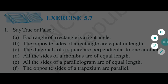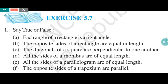The first true-false statement is: each angle of a rectangle is a right angle. As I told you, square and rectangle both have 90-degree angles. That's why this statement is true. First one is true.